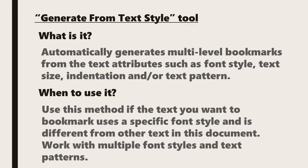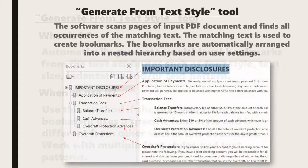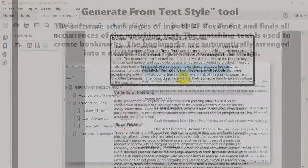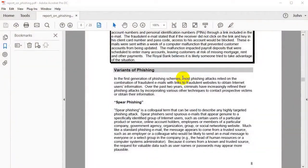It works with multiple font styles and text patterns. The software scans pages of input PDF documents and finds all occurrences of the matching text. This matching text is then used to create bookmarks, which are automatically arranged into a nested hierarchy based on user settings. So how can we put this tool into practice?